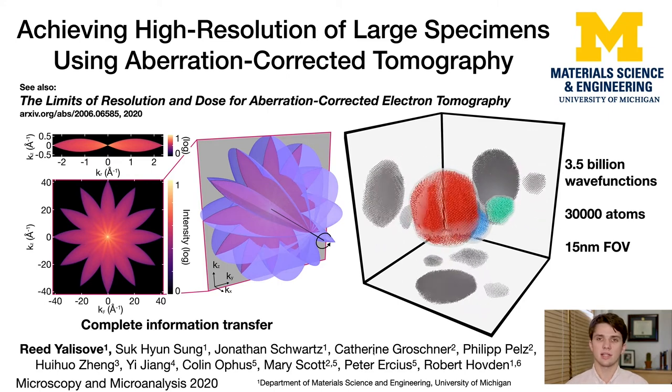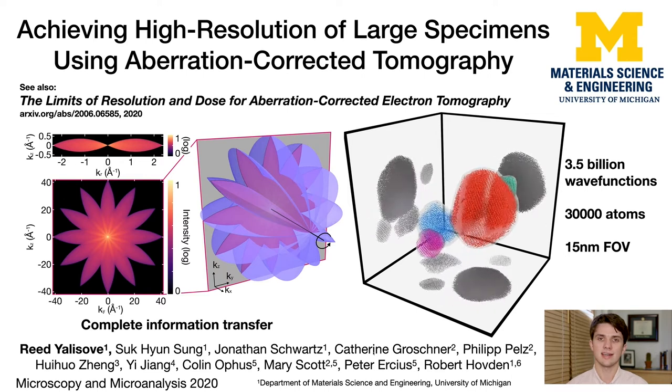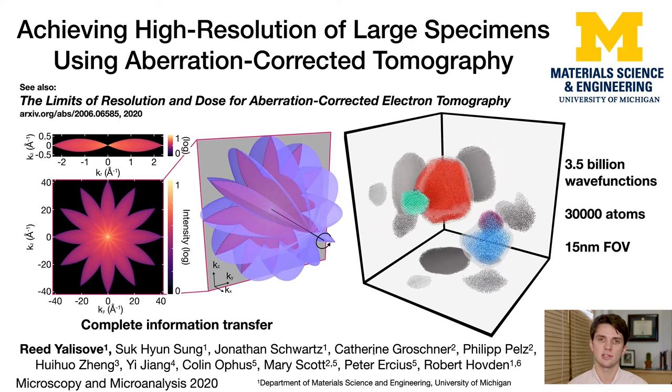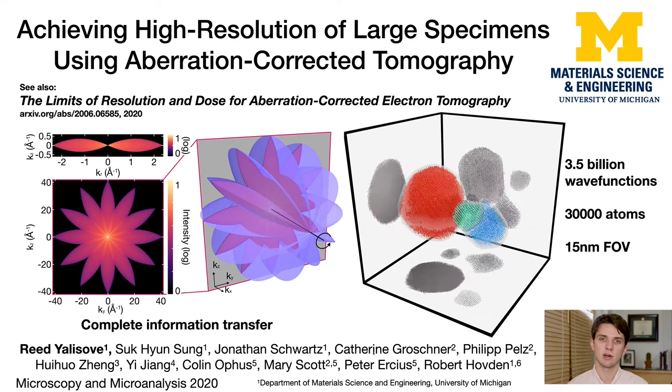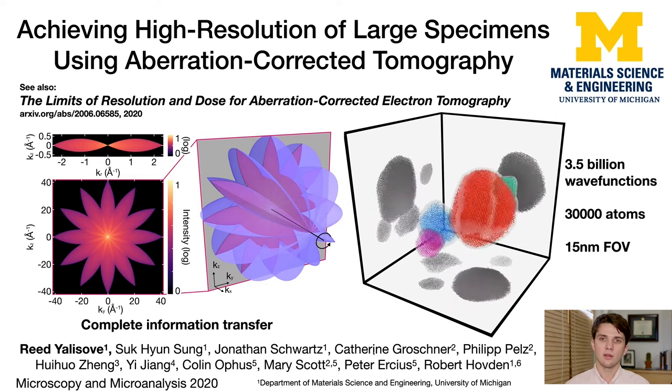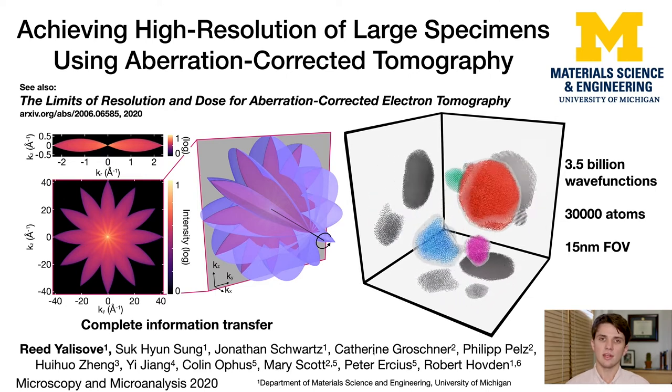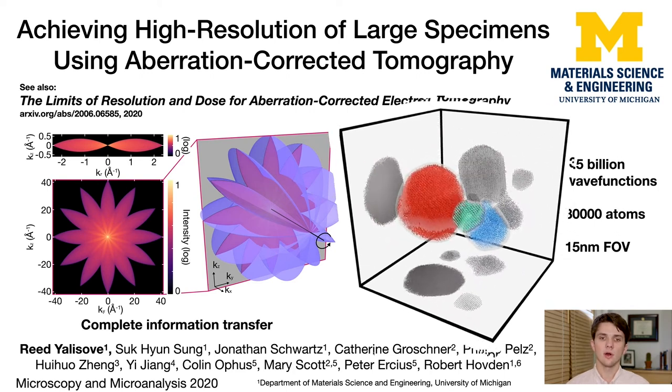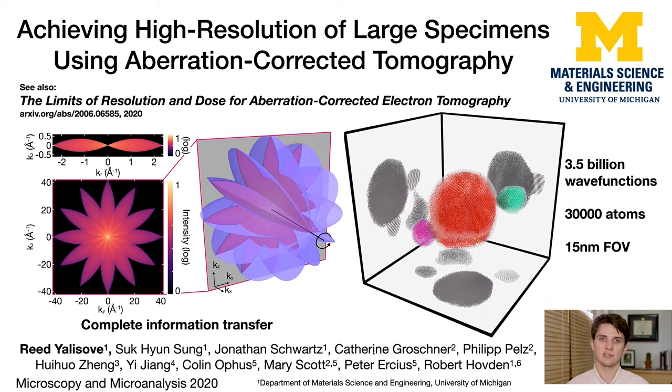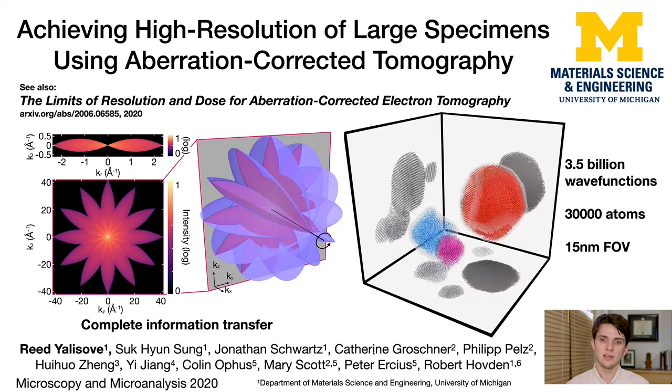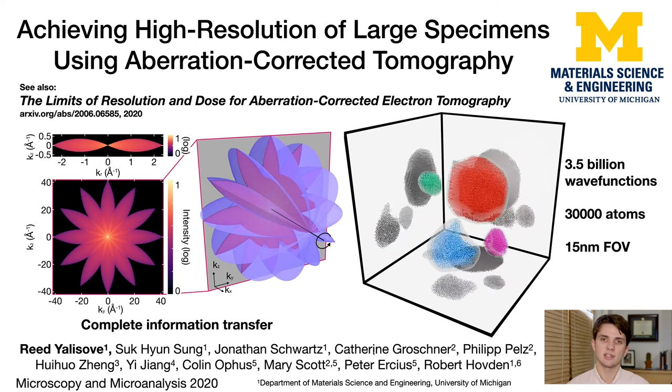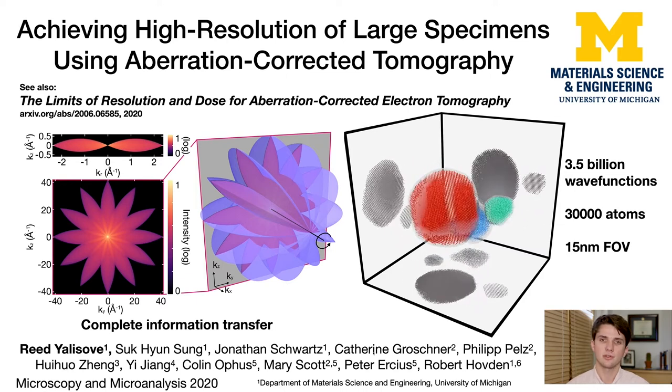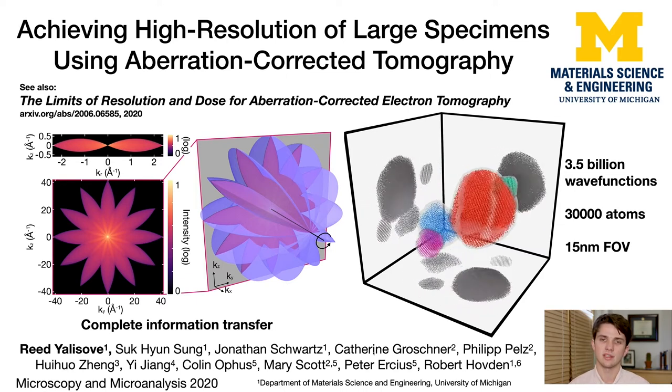Aberration-corrected tomography collects a through-focal series of images at each tilt in a tomography tilt series. On the left, we visualize in three dimensions the region of space from which aberration-corrected tomography collects information in frequency space. But until now, we did not know if we could measure the atomic coordinates for extended objects. On the right, we see a simulated aberration-corrected tomography reconstruction. This shows that there is no sampling limit for aberration-corrected tomography. This object was reconstructed at atomic resolution over 15 nanometers in three dimensions.